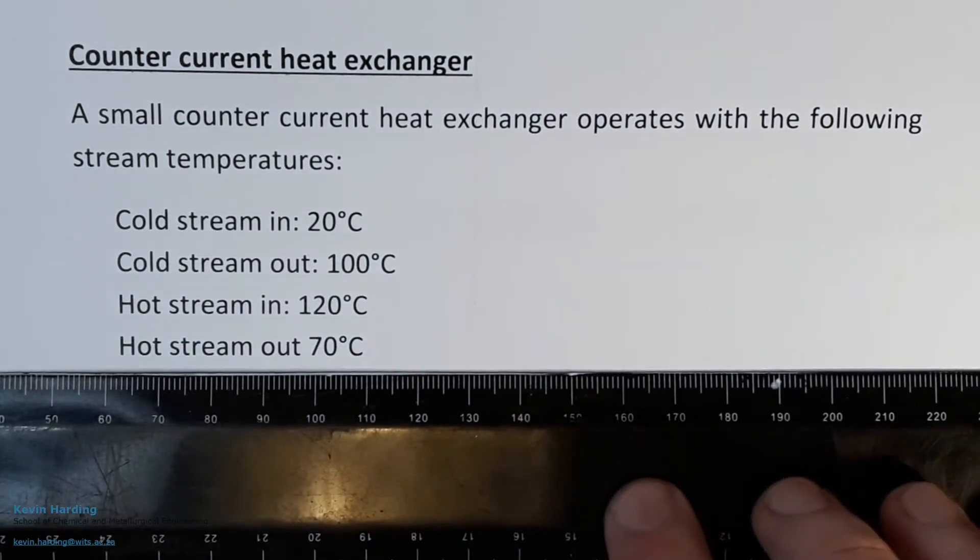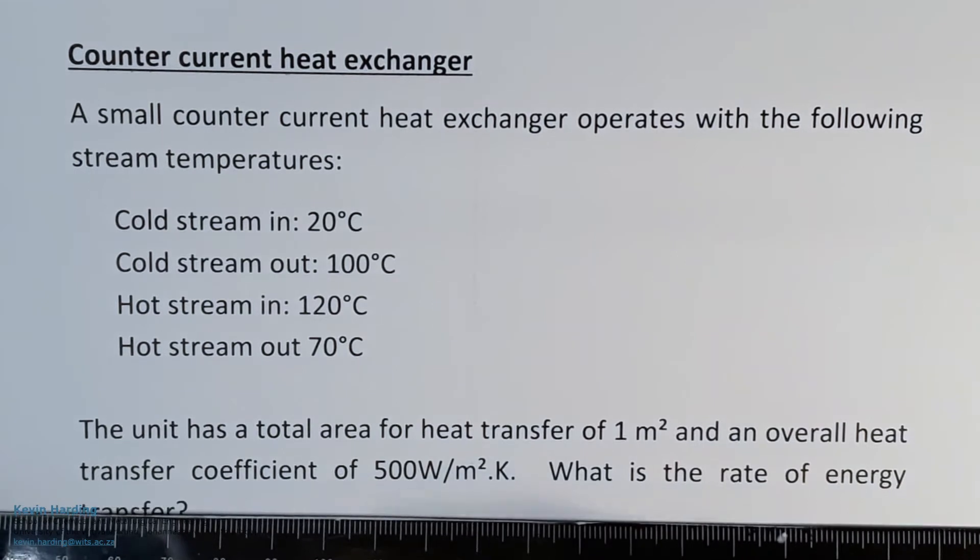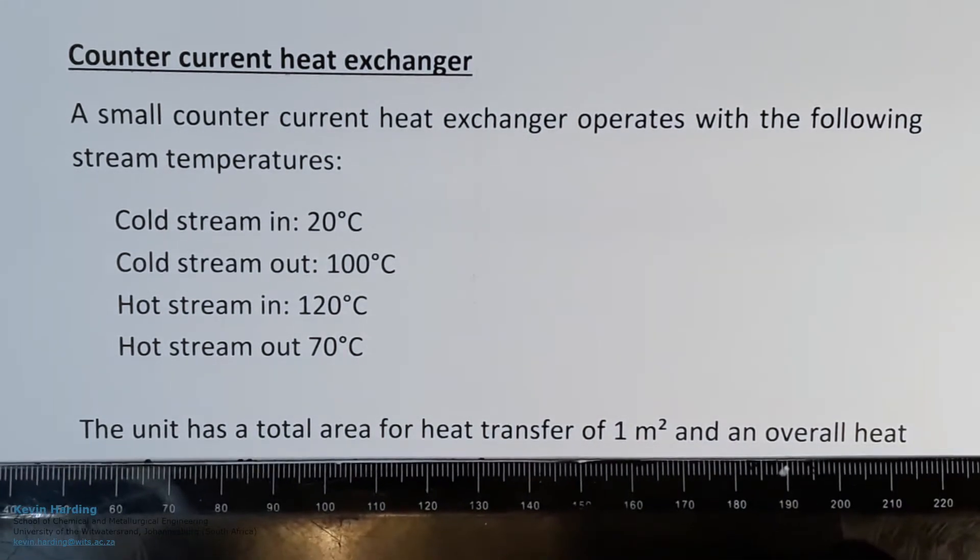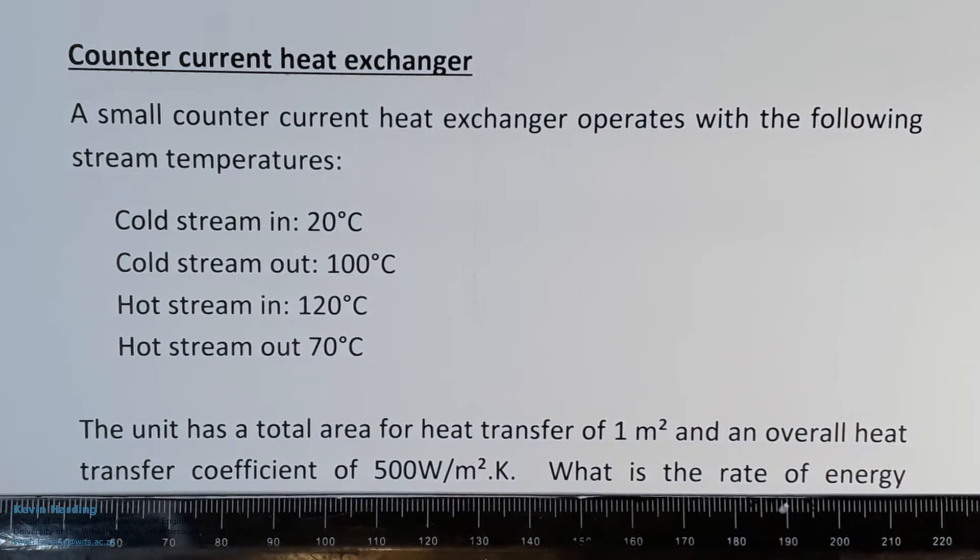Hot stream in, hot stream out: 120 and 70 degrees Celsius respectively. The unit has a total area for heat transfer of one square meter and an overall heat transfer coefficient of 500 watts per meter squared Kelvin.